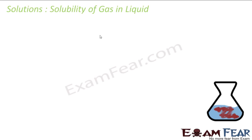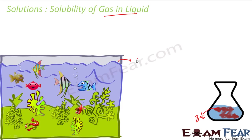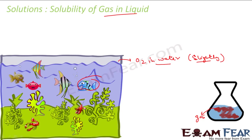Now we'll talk about solubility of gas in liquid. For example, this gas dissolves in liquid. The best example is oxygen dissolving in water — even slightly — but it has a huge role. All aquatic animals and fish need this oxygen, and aquatic plants produce oxygen, so even though it is slightly soluble, oxygen has a critical role in water. HCl gas is highly soluble in water.